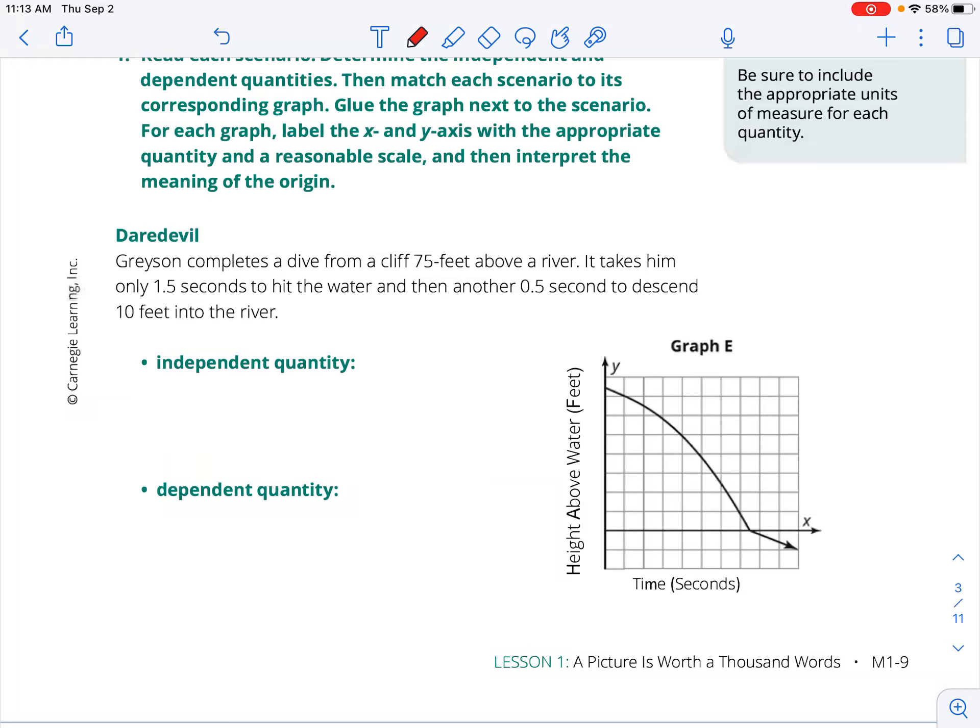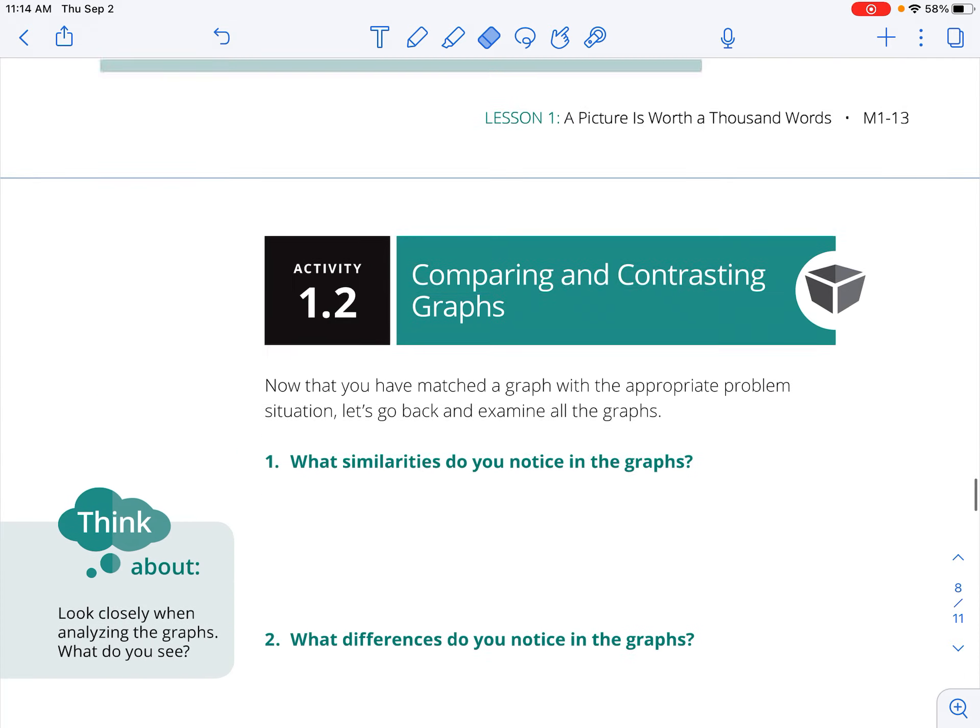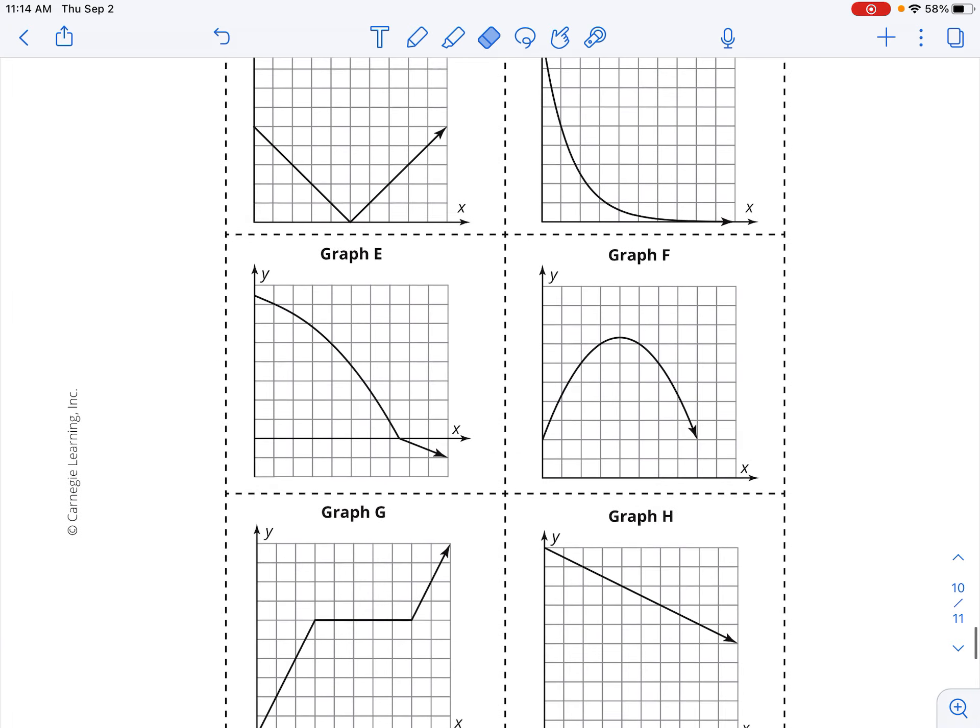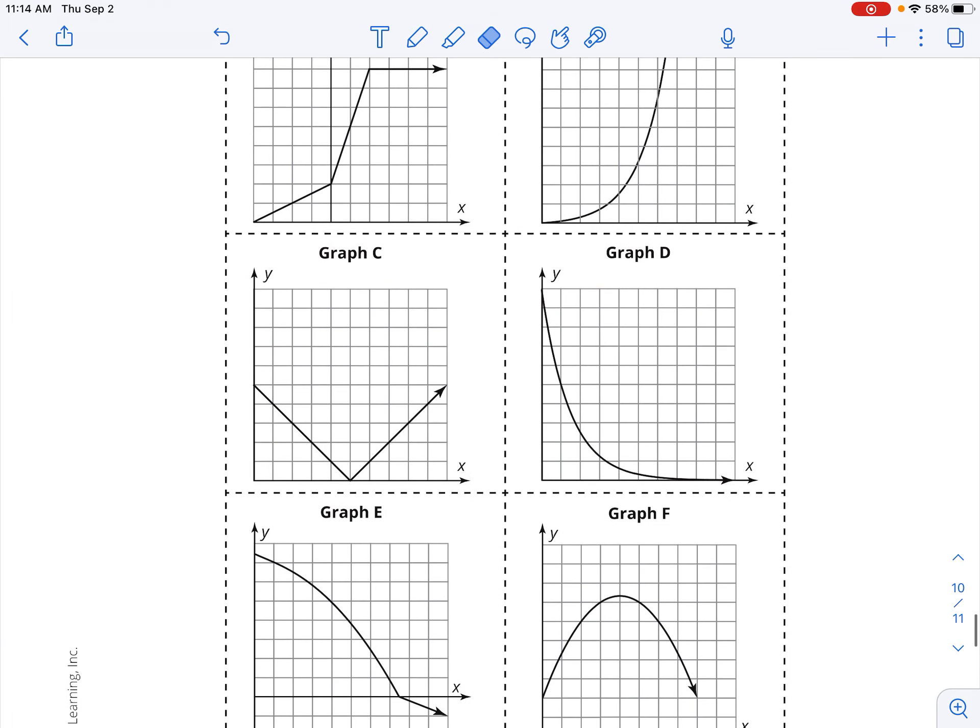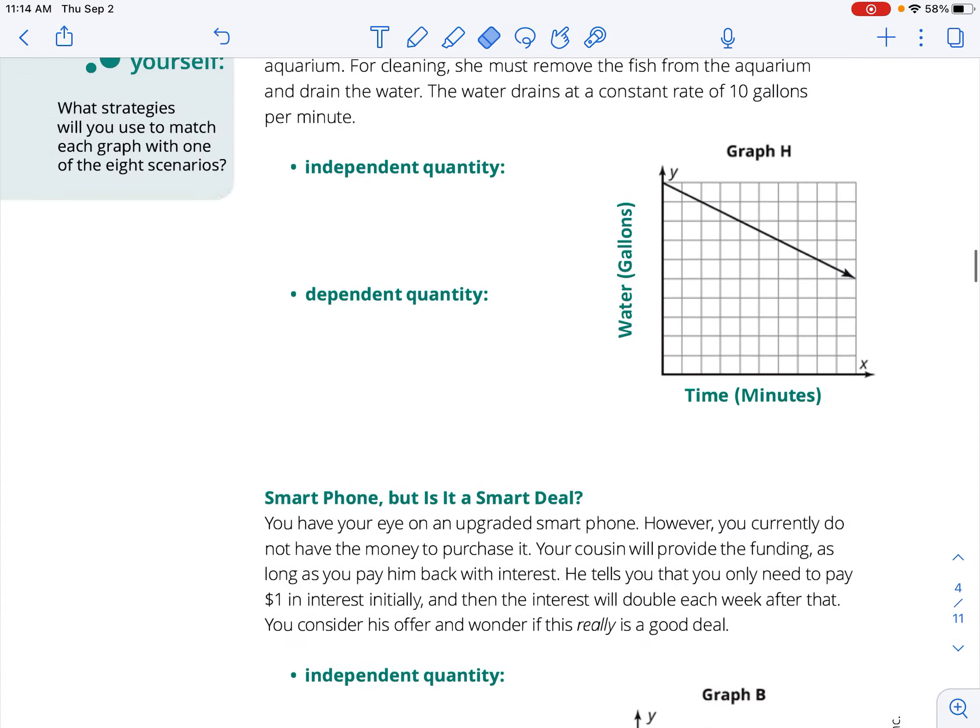Okay, on the next page, what we have is some more scenarios, and what we want to do is read through those scenarios and figure out which one is the independent and which one is the dependent quantity. Now, where this graph is coming from is at the end of this lesson, so if you were to flip your pages, at the end of this lesson on page M1-17, we have eight graphs. You should cut those out, get some tape, and then we're going to figure out where those eight graphs go.